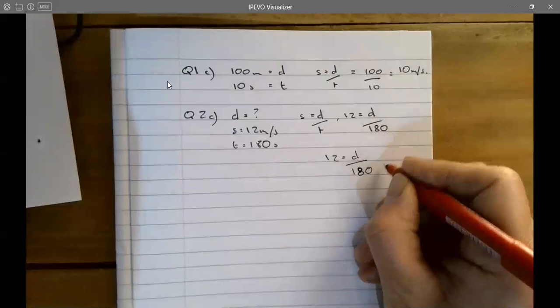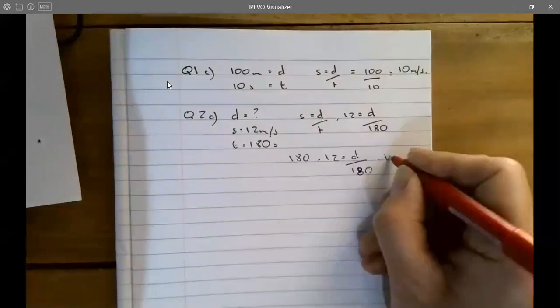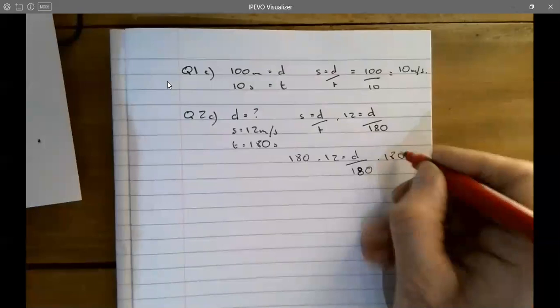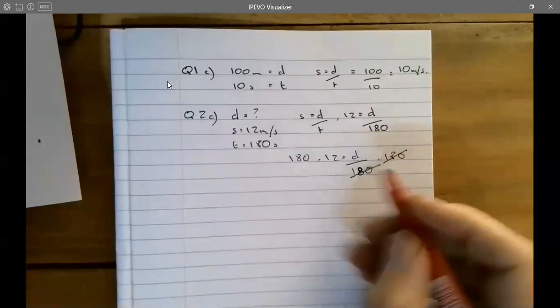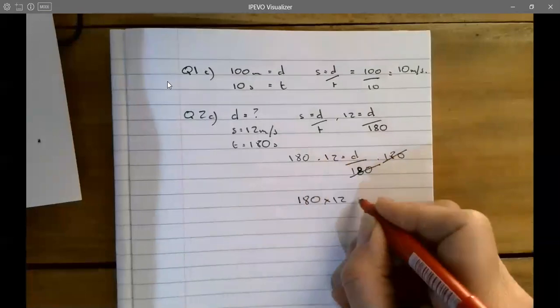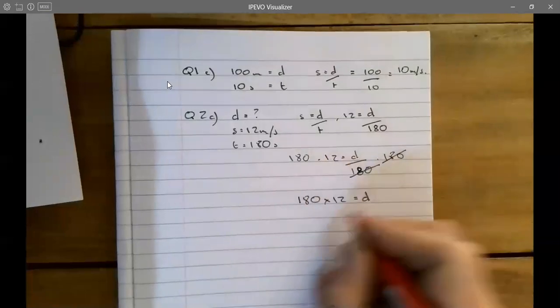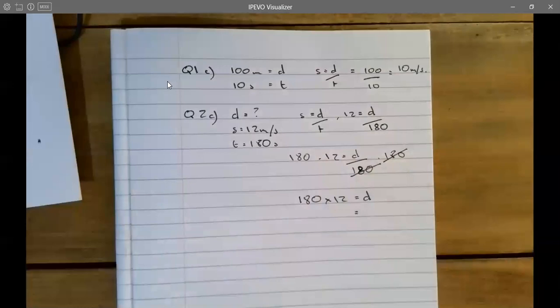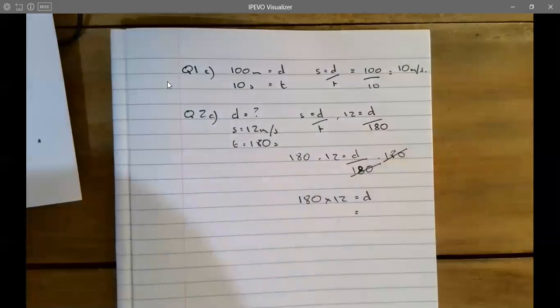Times both sides by 180, that will cancel and that will leave us with 180 times 12, and that's equal to d. So our answer is 180 times 12, and that's 2160 meters.